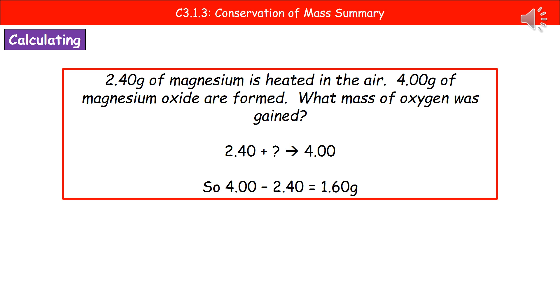So all you need to do then is just rearrange it, do 4.00 minus the 2.40, and whatever's left over must be the mass of oxygen because there's nothing else. And the reason that we know that is because atoms can neither be created nor destroyed. So the mass of the products must equal the mass of the reactants.